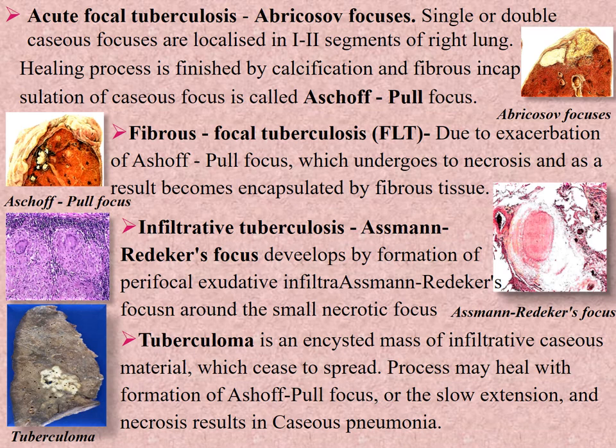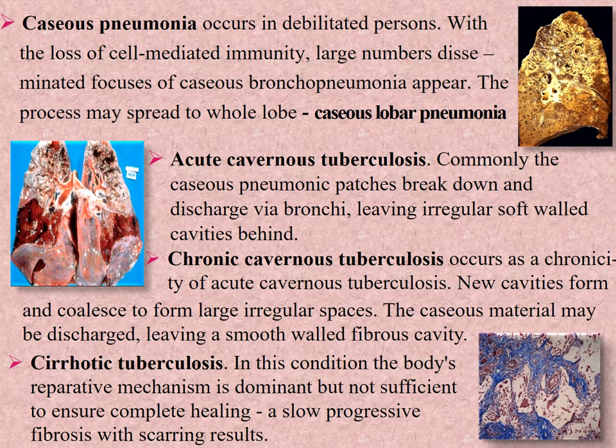This process may originate from the previous two forms and result in subsequent consecutive forms. Tuberculoma is an increased mass of infiltrative caseous material which ceases to spread. The process may heal with formation of an Ashoff–Puhl focus, or result in slow extension with formation of new tubercles and necrosis leading to caseous pneumonia. Caseous pneumonia occurs in debilitated persons; with loss of cell-mediated immunity, large numbers of disseminated foci of caseous bronchopneumonia appear. The process may spread to the whole lobe — caseous lobar pneumonia develops. Related bronchi often show bronchiectasis.